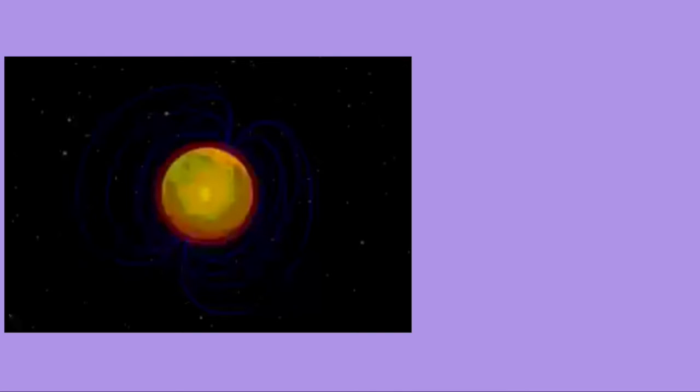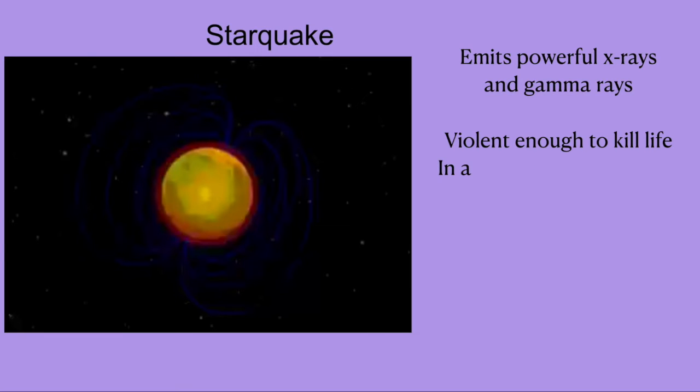Sometimes, these rotating magnetic fields cause the surface to split off and emit a blast of gamma and X-ray radiation. This is known as a star quake. Star quakes are so powerful that if one takes place within a radius of 10 light years from Earth, it would rip off the existence of life on Earth.